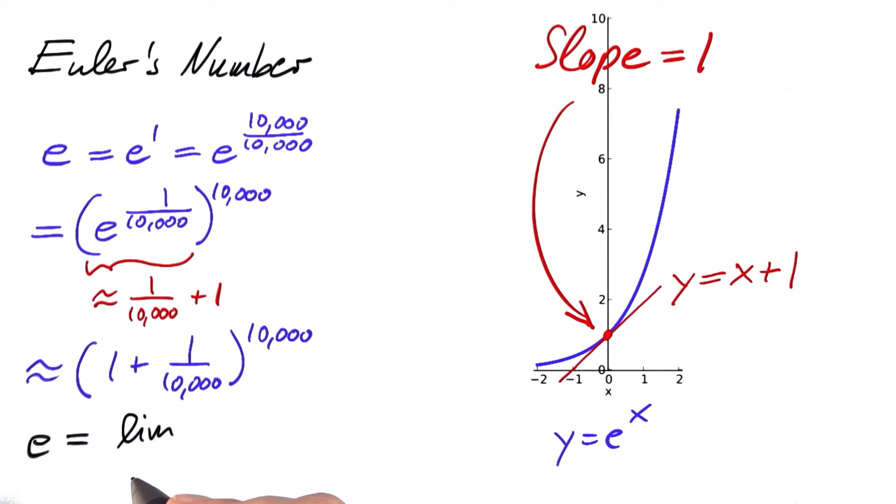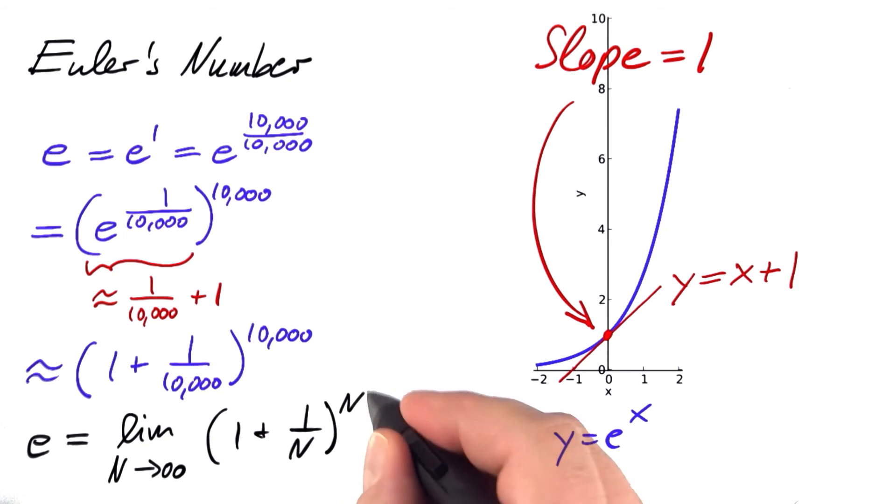e equals the limit of n goes to infinity of 1 plus 1 over n to the power of n. I hope that you can now easily guess where this comes from.